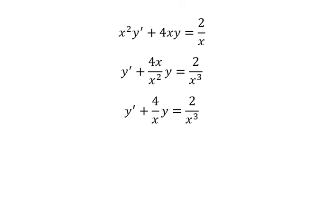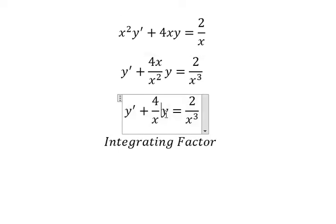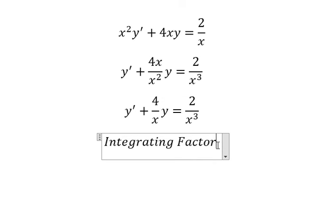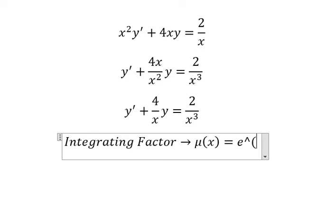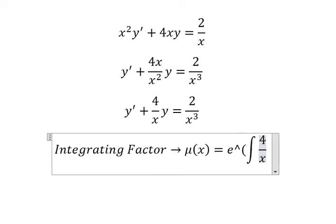Now we can use the integrating factor because we have the original function and first derivative of the function. So that should be μ(x) equals e to the power of the integral of 4 over x dx.